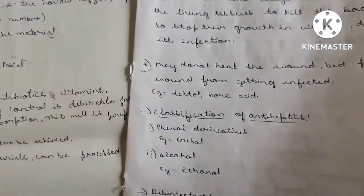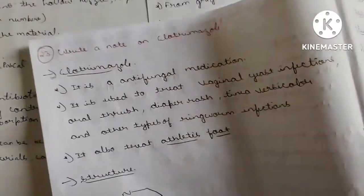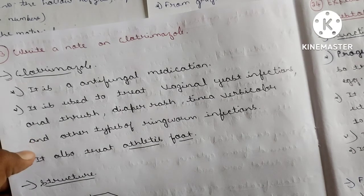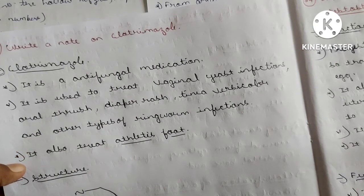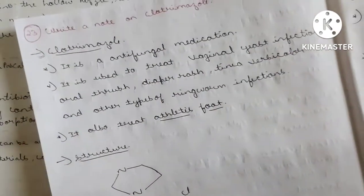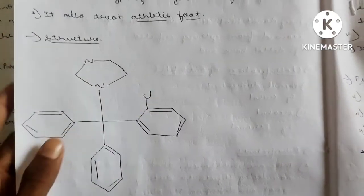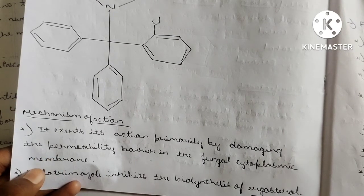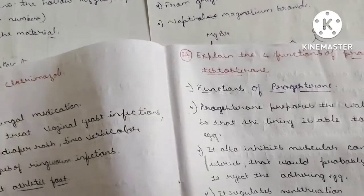Classification of disinfectants: Physical agents — heat and filtration. Chemical agents — halogens, alcohols, and surface-active substances. Write a note on clotrimazole: It is an antifungal medication used to treat vaginal yeast infection, oral thrush, diaper rash, tinea versicolor, ringworm infections, and athlete's foot. Its mechanism of action is damaging the permeability barrier in the fungal cytoplasmic membrane and inhibiting the biosynthesis of ergosterol.